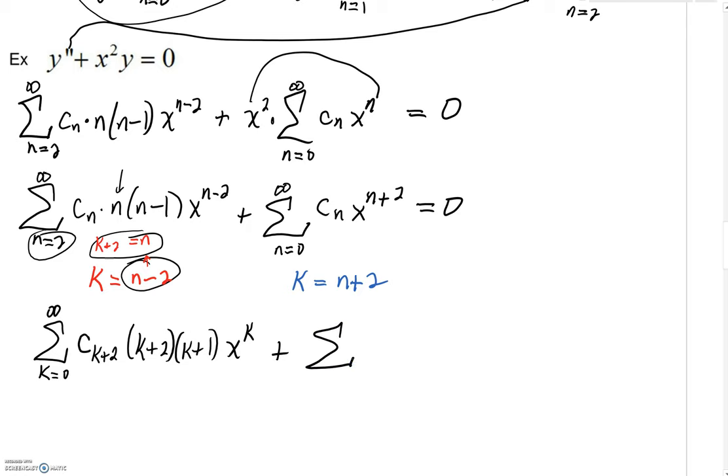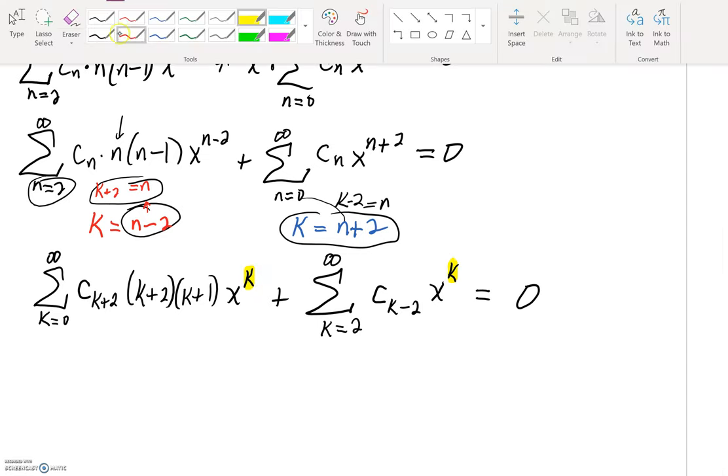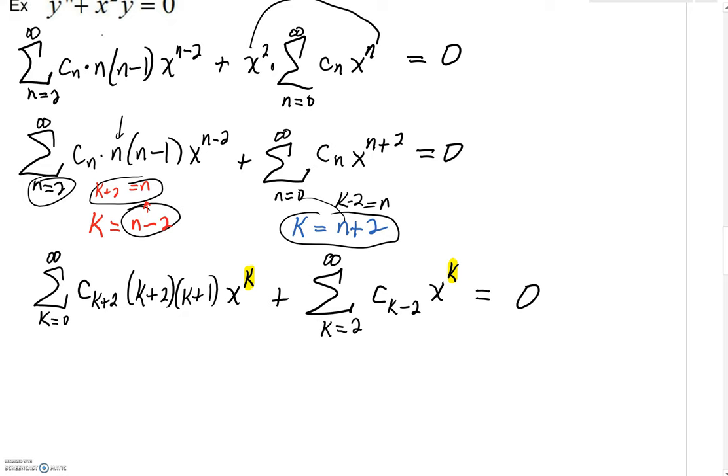The second sigma, thankfully, is quite a bit easier. If n equaled 0, then k would equal 2. And n would be k minus 2 with this substitution. So we'd have c sub k minus 2. And then we'll have x raised up to the k power. So things have gotten way better. They're way better in the sense that now I've got x to the k for both of these series.